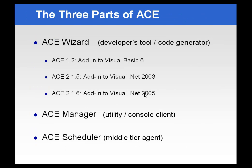There are three components to the ACE product: the ACE Wizard, the ACE Manager, and the ACE Scheduler. When you install the ACE Wizard, it will install all versions. However, the version that you actually use will be determined by your development environment — whether you're using Visual Basic 6, Studio .NET, 2003, or 2005. The only difference between the versions of ACE is the development environment in which it lives; the actual add-ins do the same thing regardless of the environment.